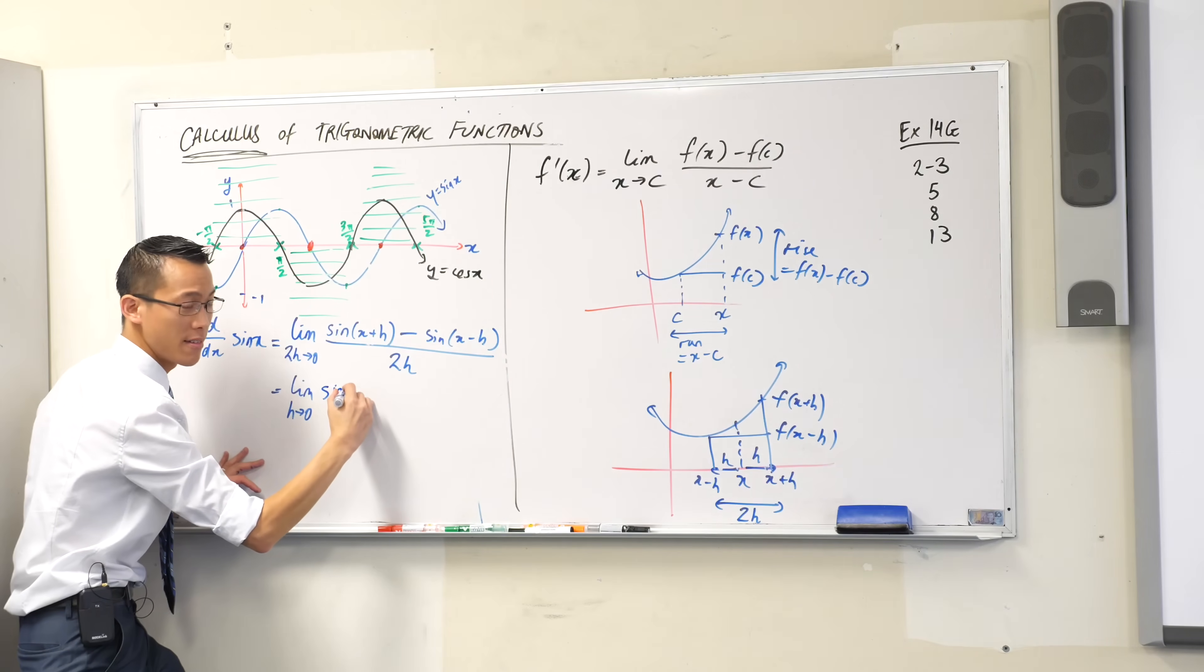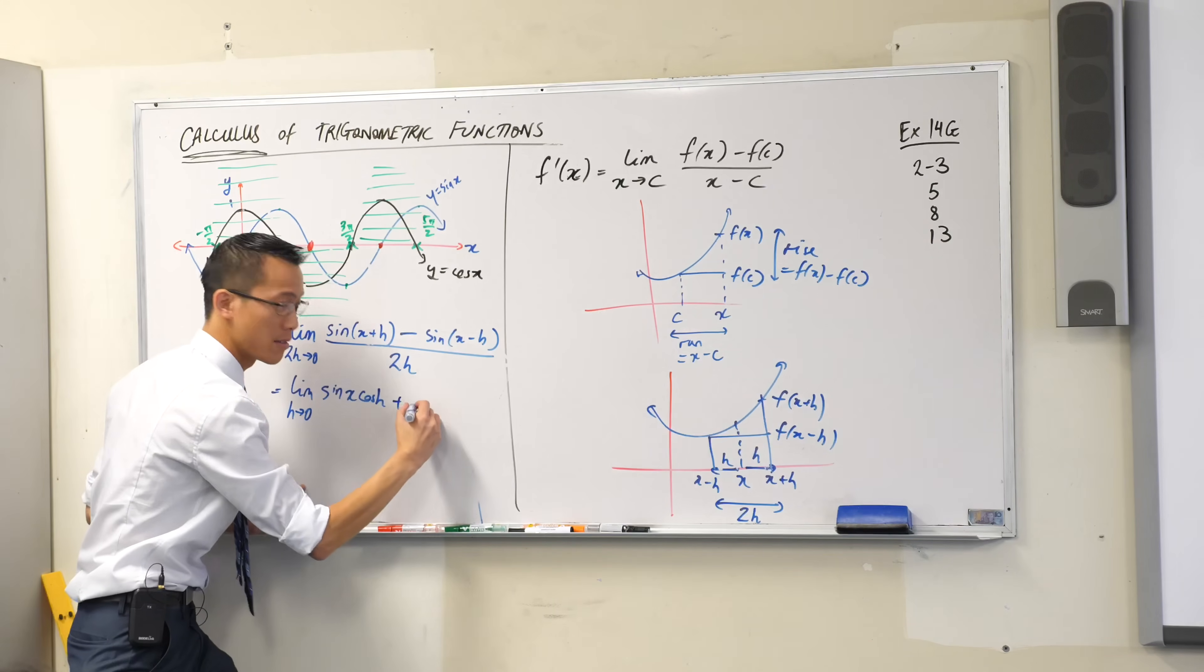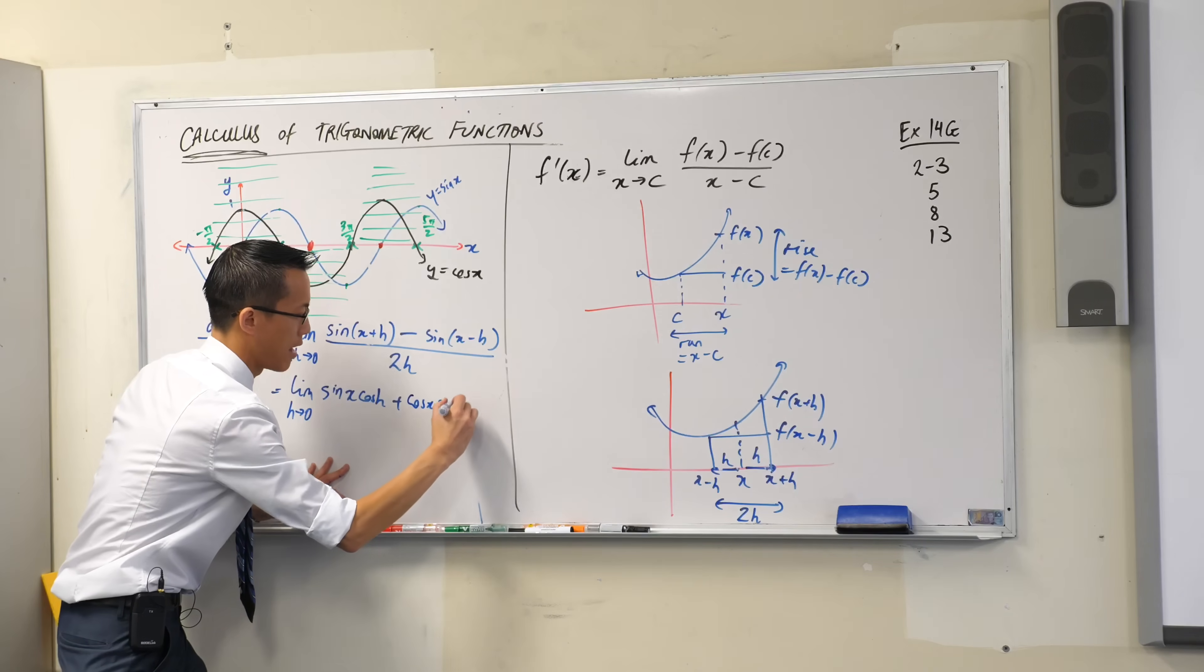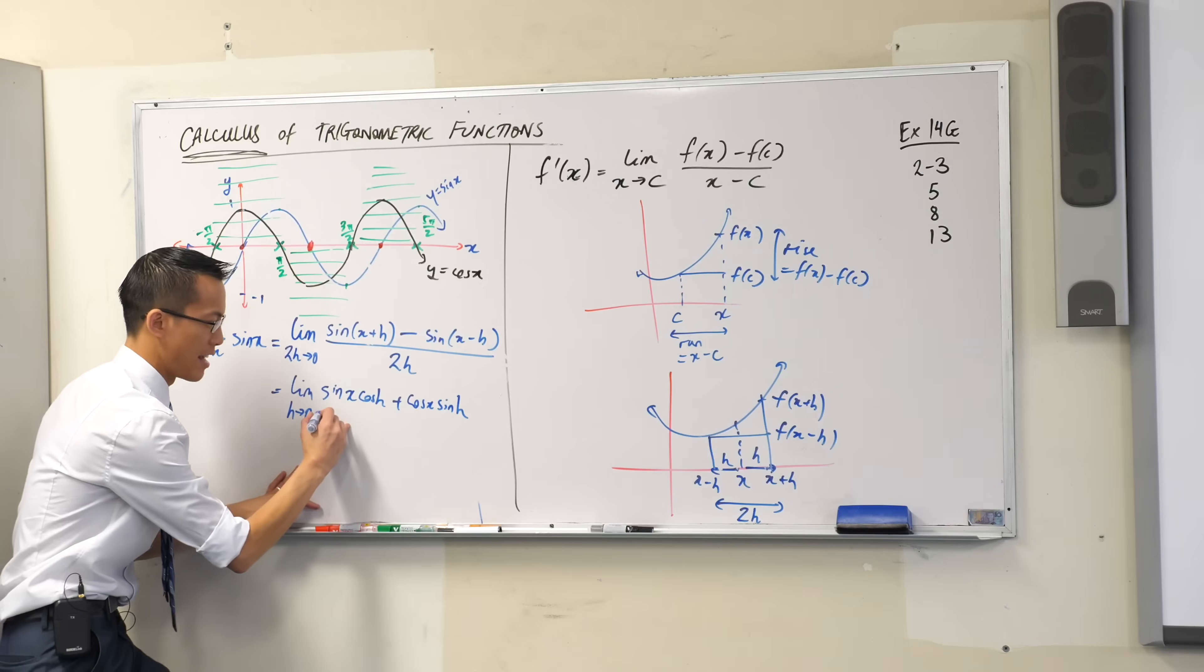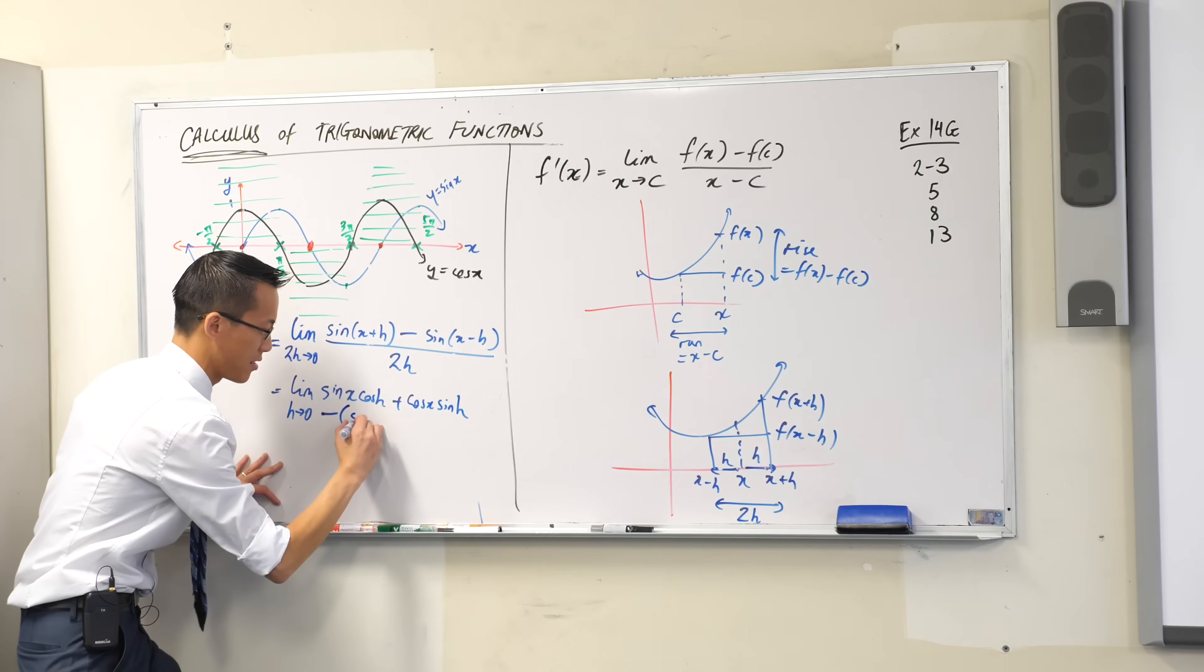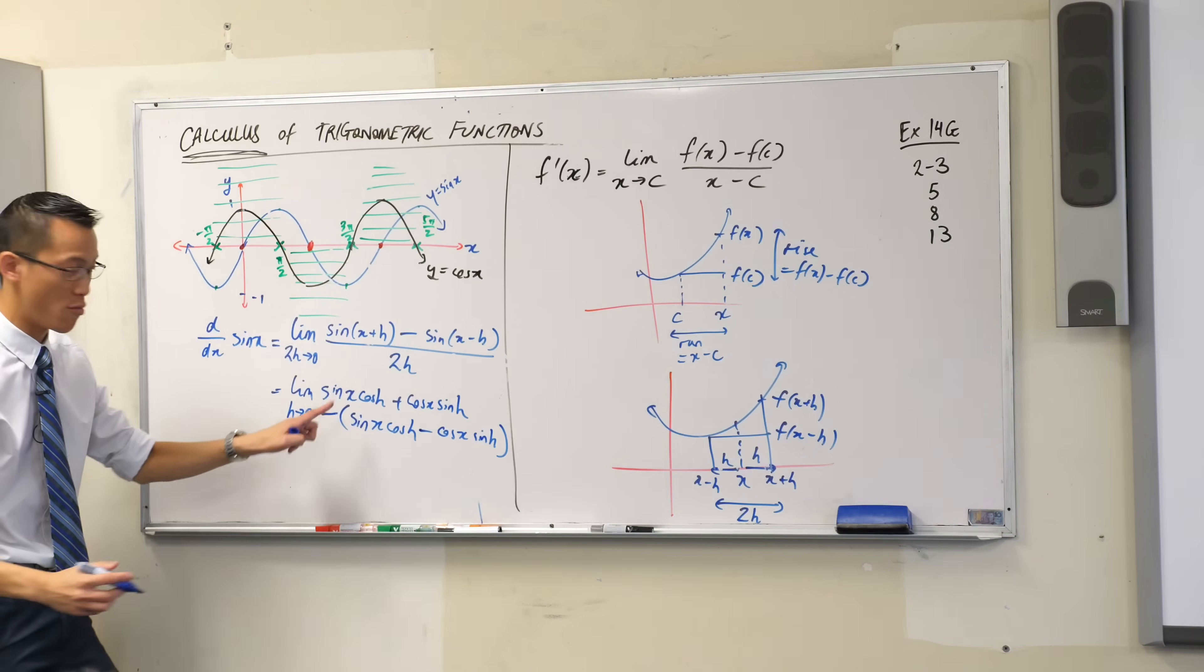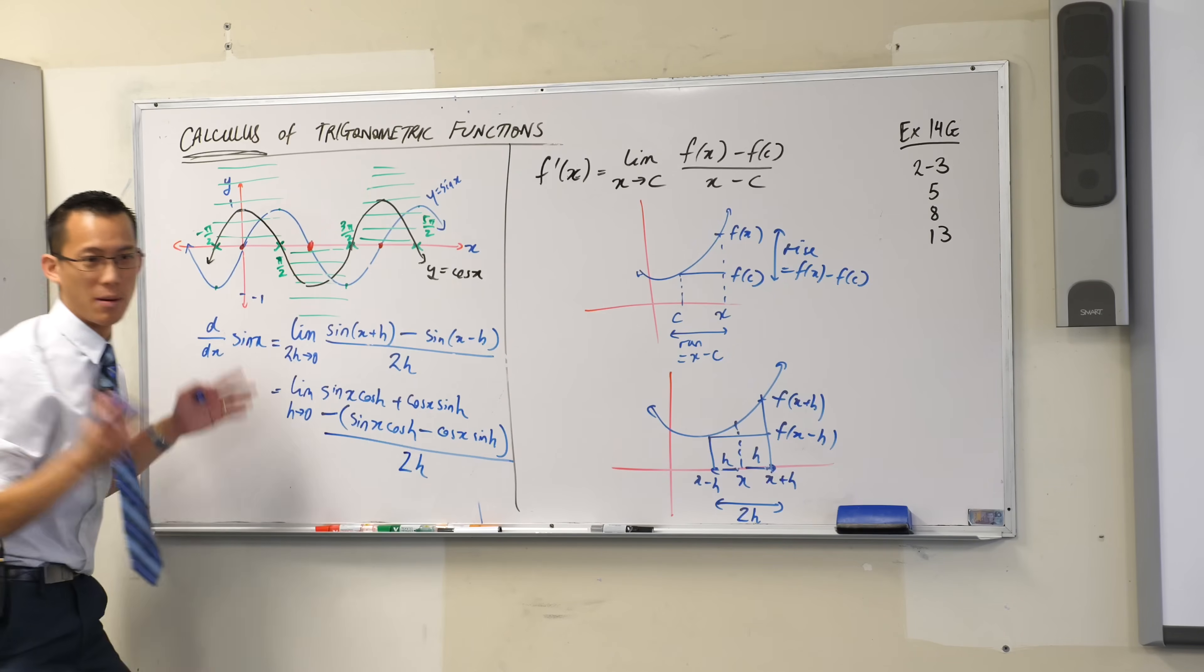It's going to be sine x cos h plus cos x sine h. I tend to write the angles in order and keep them, but it doesn't matter which way you switch it. I'm sort of out of space on my column here, so I'm going to go into the next line. I'm going to minus this thing. What is this thing? It's very similar. It starts the same way, but its only difference is... There's the numerator. That whole thing is the numerator. The denominator hasn't changed.